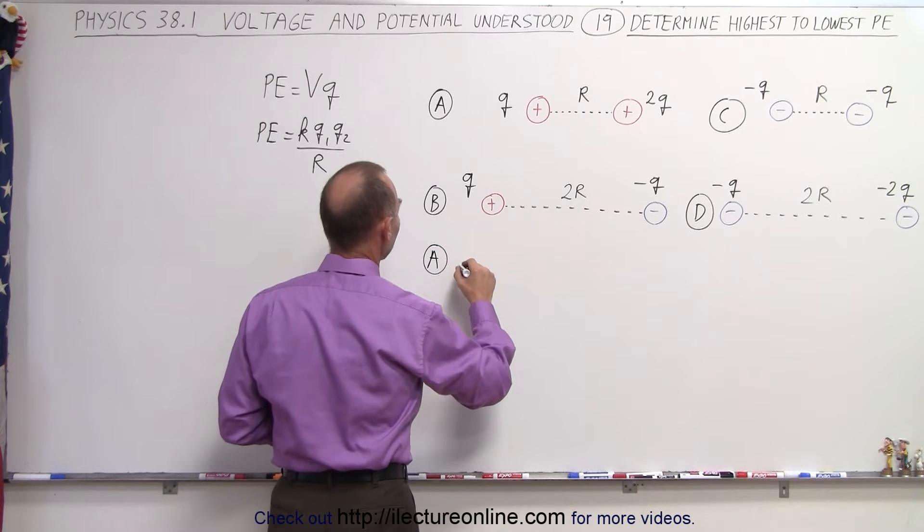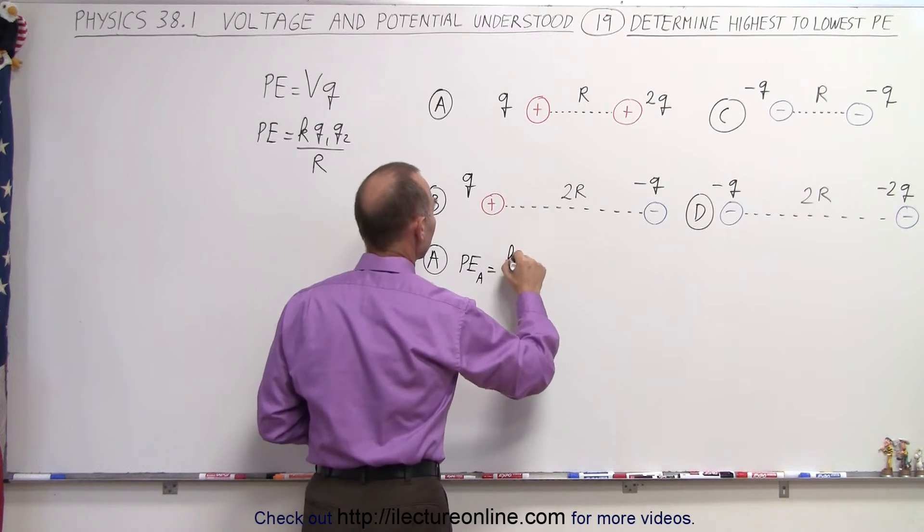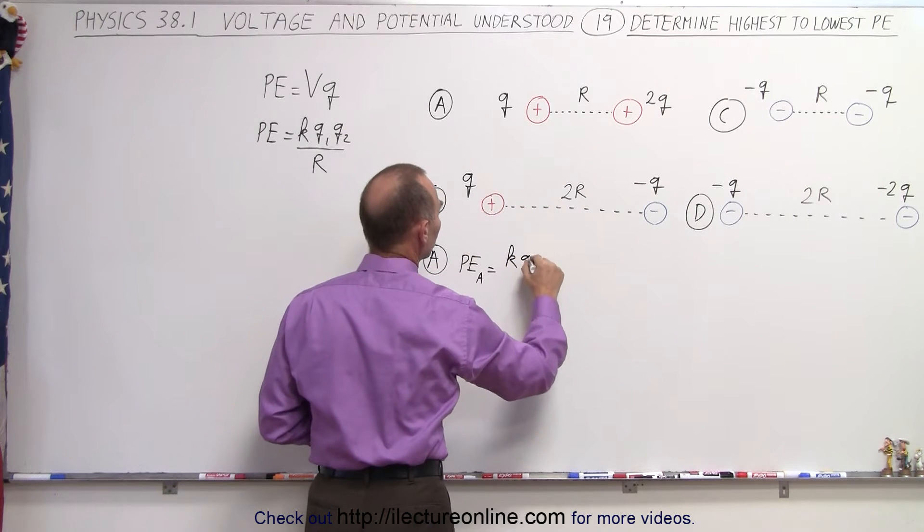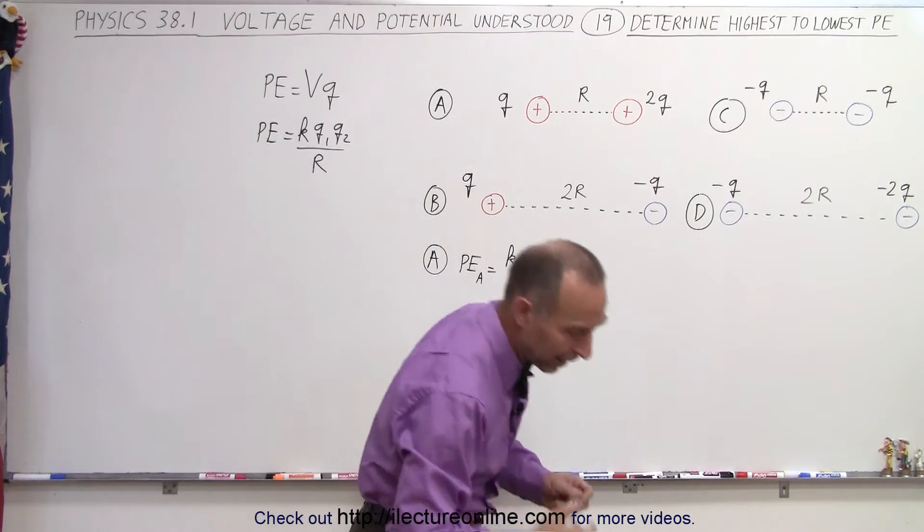In this case, we have A, the potential energy, let's call it sub A, is equal to K times Q1, which is Q, times Q2, which is 2Q. Oh, Q, not K. That's the wrong letter. Here we go.